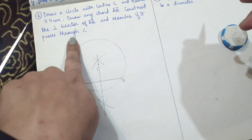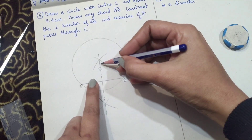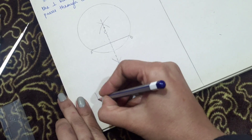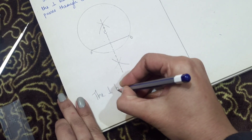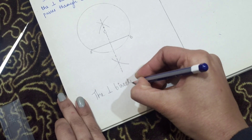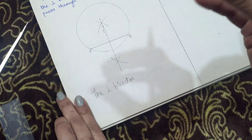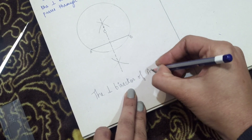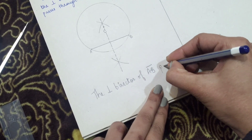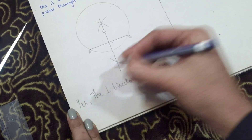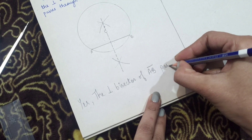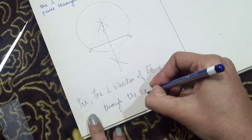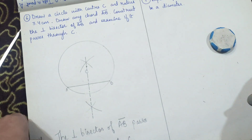You have constructed a perpendicular bisector of chord AB. We had to examine if it passes through C or not - and yes, as you can see it passes through center C. Write: the perpendicular bisector of chord AB passes through the center C. Hope you understood this question.